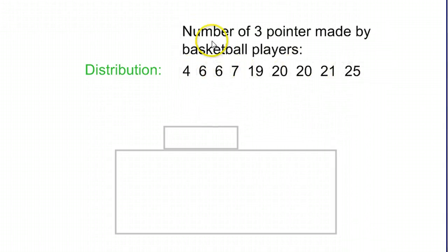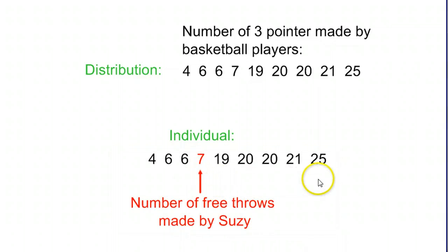Whenever you have a distribution, it's just the full list of numbers. So the number of three pointers made by different basketball players, each of these numbers represents a different individual, a different basketball player. When we're talking about individuals, we want to know where a single player falls within that distribution. So for example, that seven here, imagine that that is Susie. Susie made seven out of however many free throws were being shot. And so that seven is the individual value that we want to rank in this distribution.